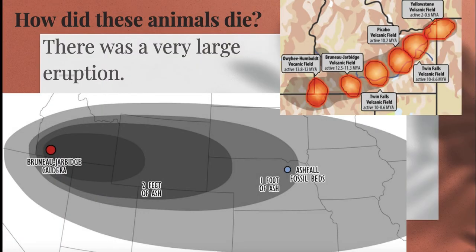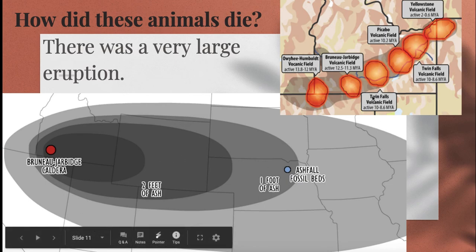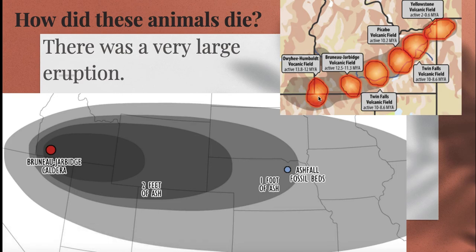So how did they die? Basically, there was a really, really large eruption. If you look at the picture here at the top, we can see what's known as a volcanic hotspot that resides in our country in the lower 48 states. As the North American plate has moved over the top of this hotspot, where the hotspot is located on our plate has changed. The hotspot itself stays in the same position, but the plate moves over the top. So 13.8 to 12 million years ago, it was right here in what is now the corner of Idaho.